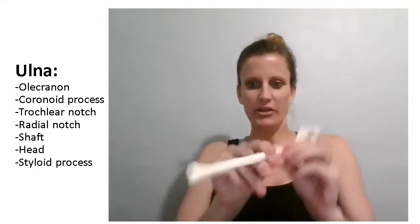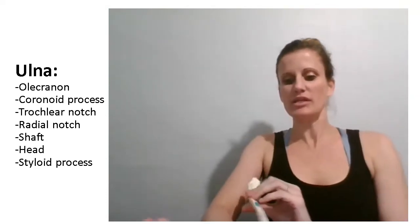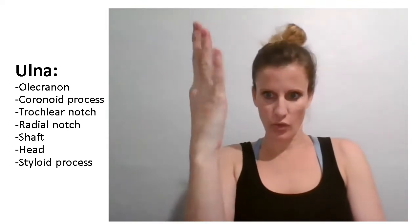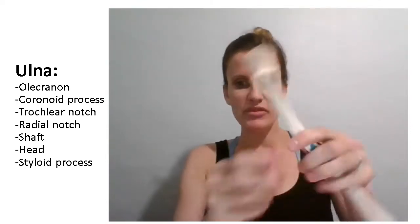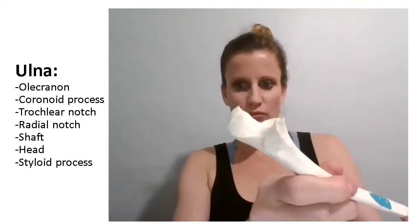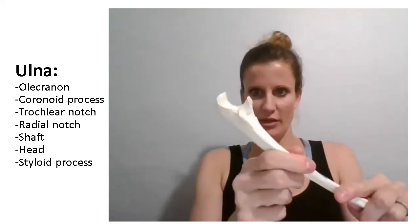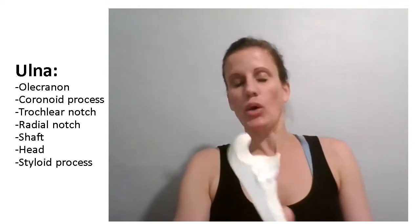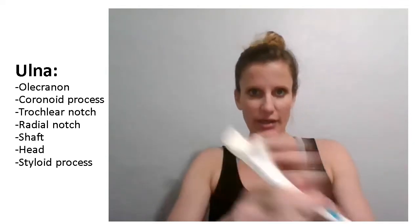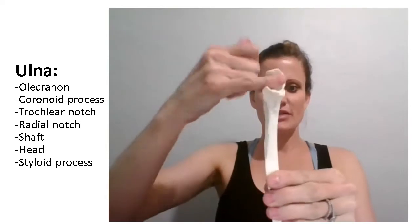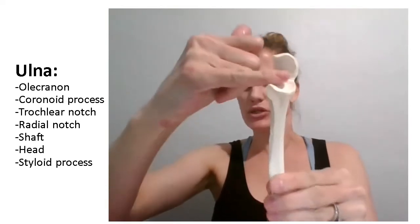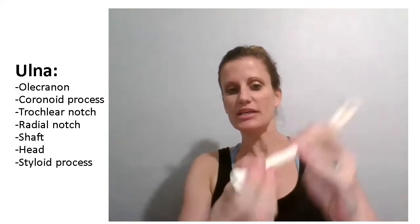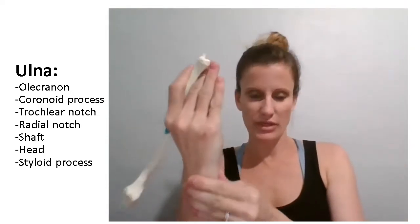This is the ulna. The ulna is one of the bones in the forearm — it's the bone on the pinky side. When you look at the top of the ulna, you can identify it because it has a U, a big U for ulna. This U at the top of the ulna articulates with the humerus. The trochlea of the humerus sits right here inside this U. The distal end of the ulna articulates with the carpal bones here at the wrist.